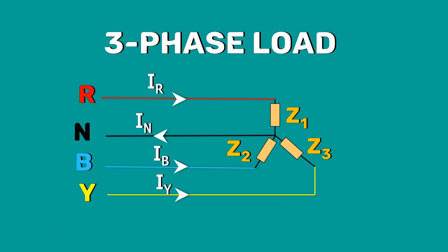Here, the current in the neutral wire will not be zero. It will be the phasor sum of the three line currents.